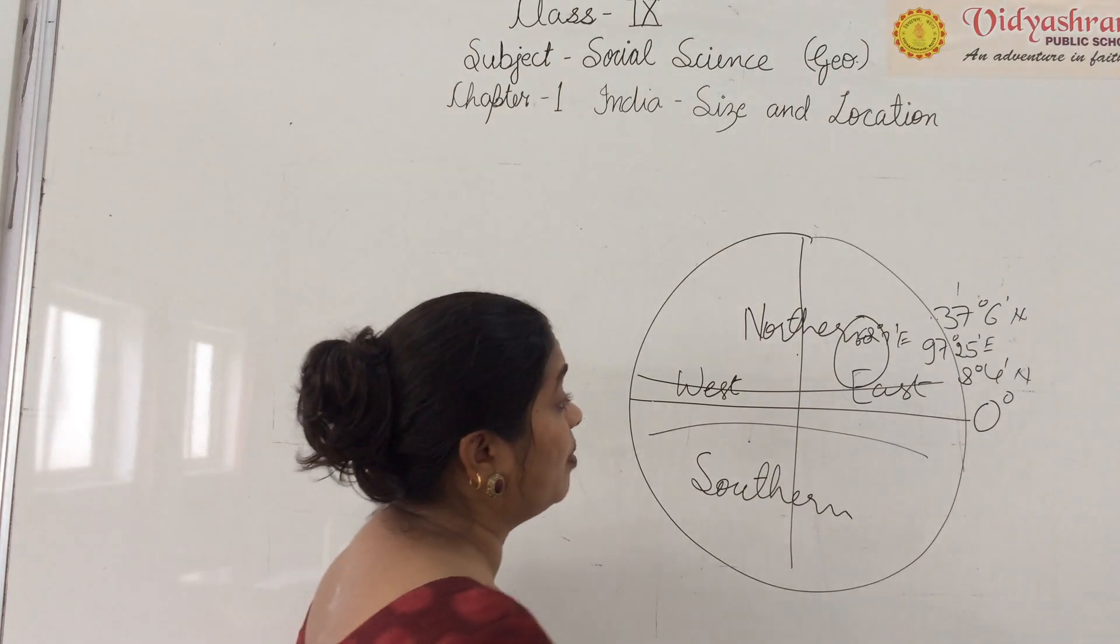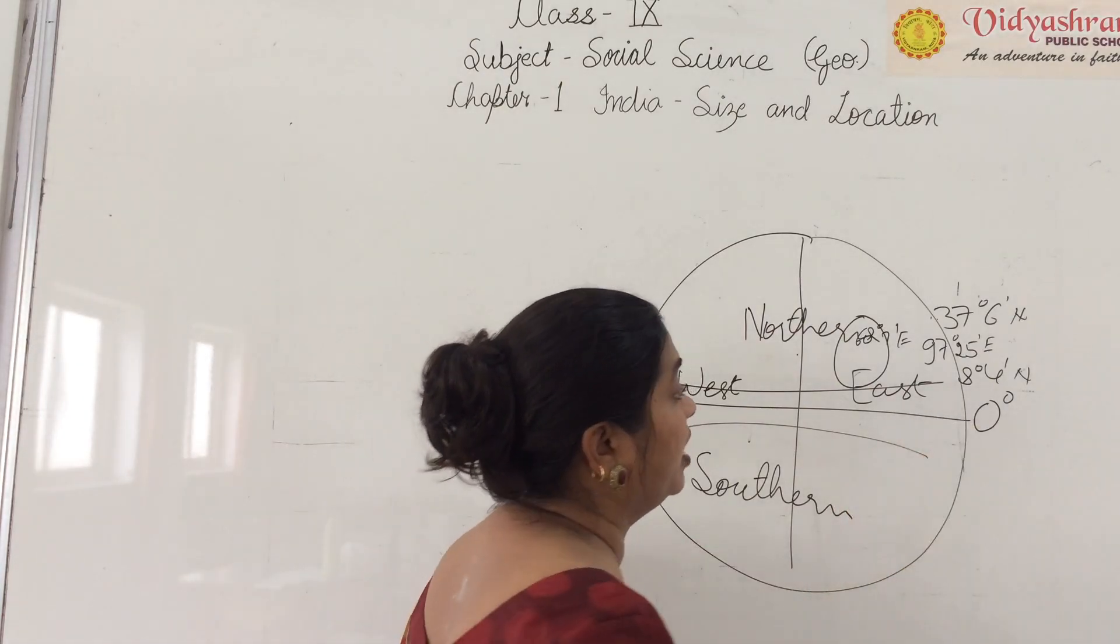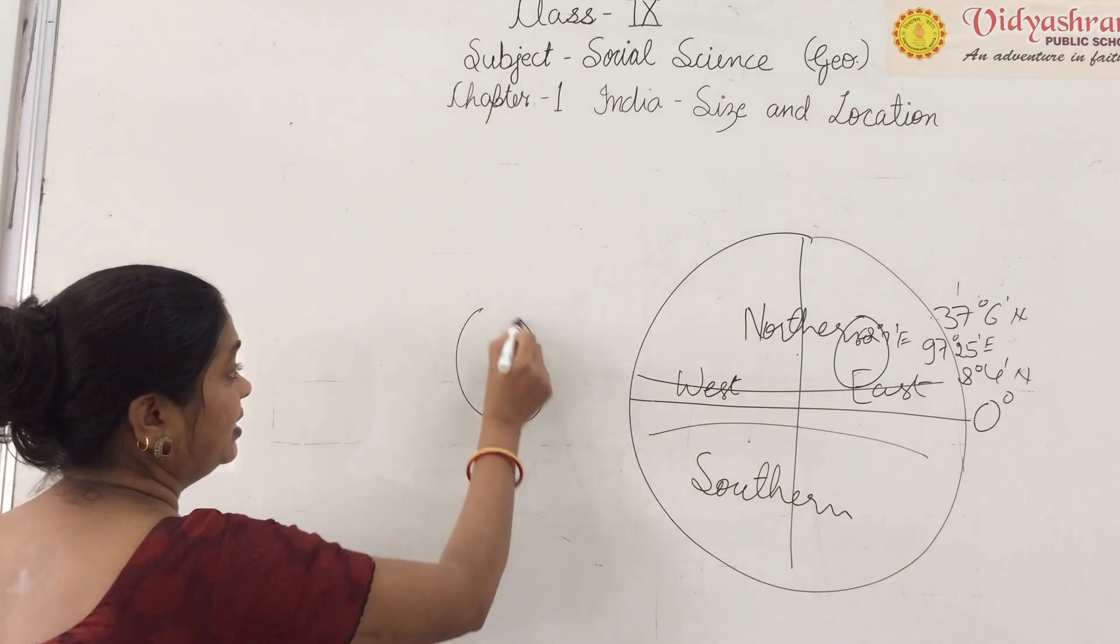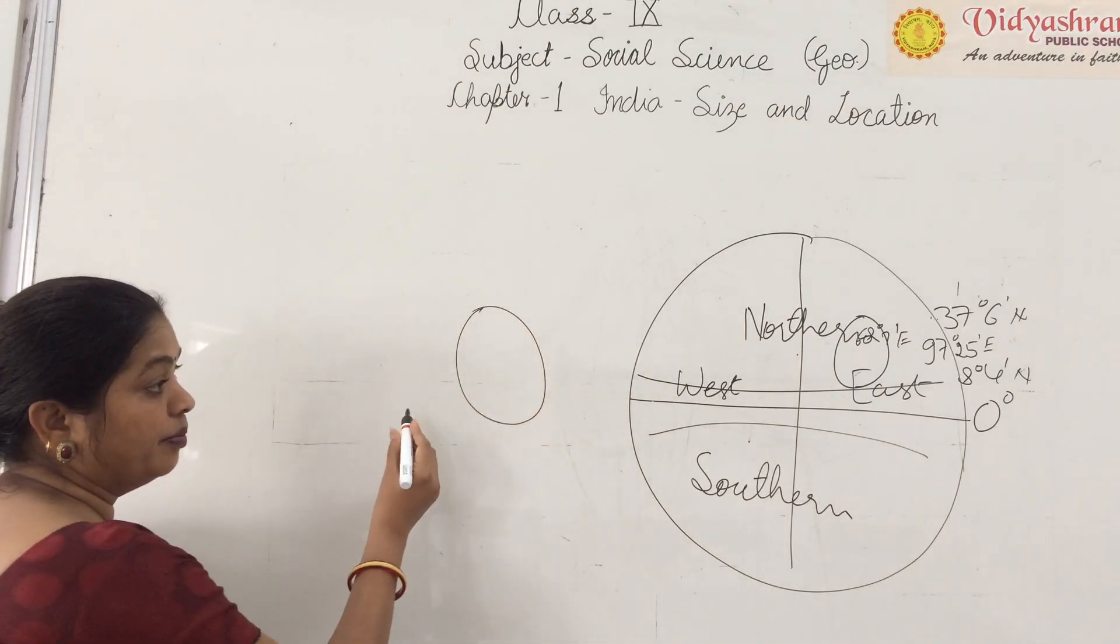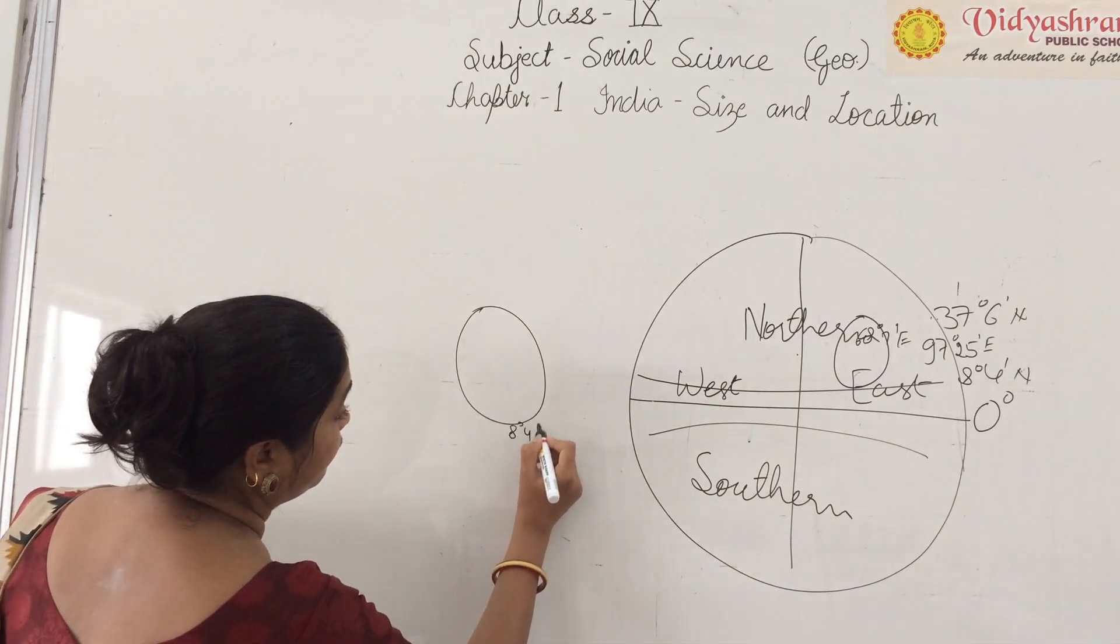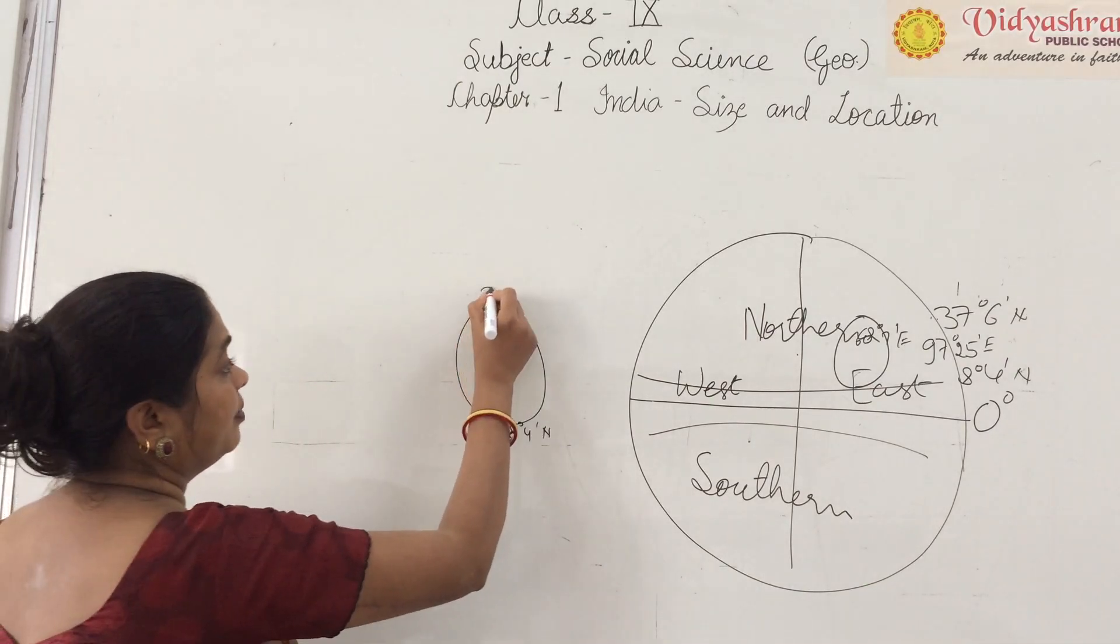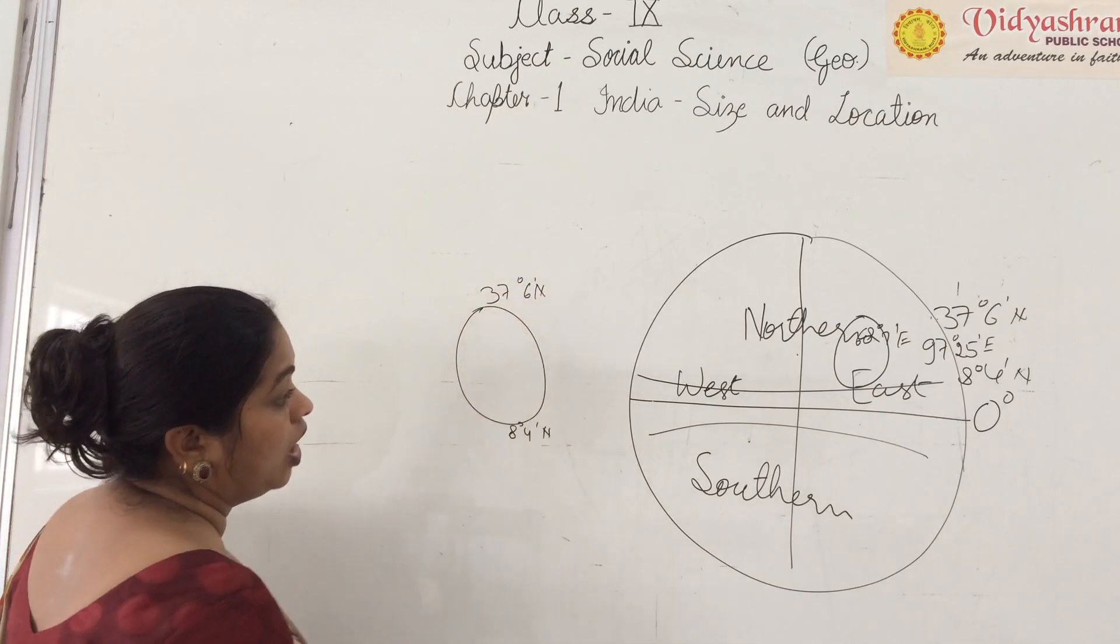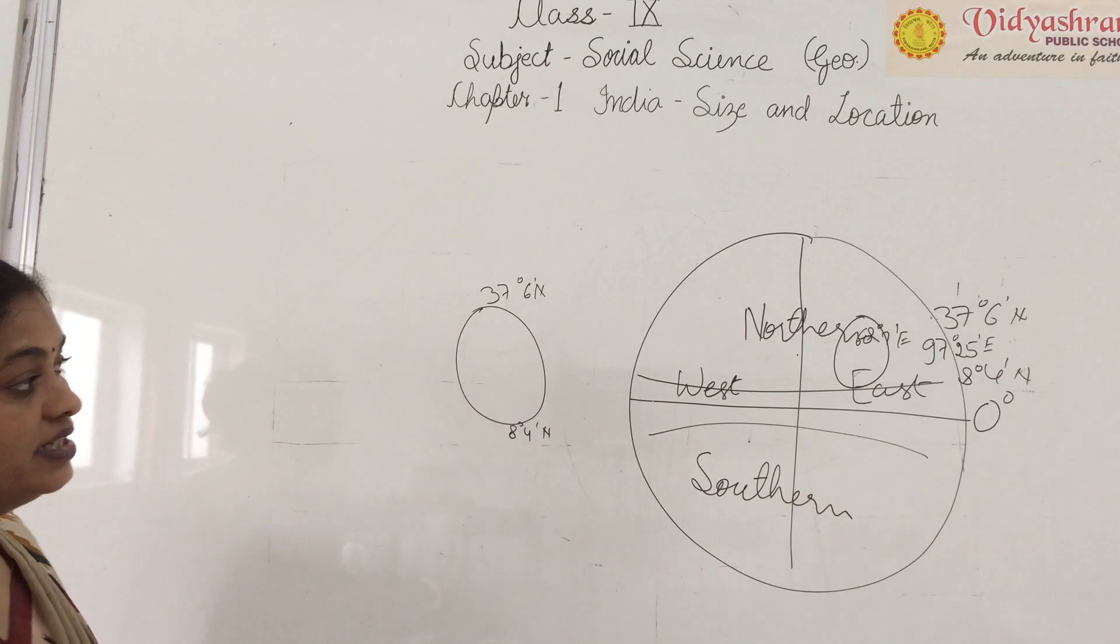Above, the important latitude is the Tropic of Cancer. The Tropic of Cancer passes through India. We have started at 8 degrees 4 minutes north and completed at 37 degrees 6 minutes north.